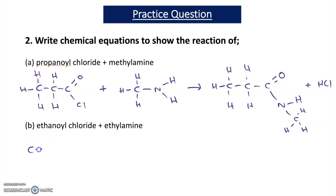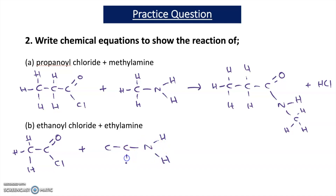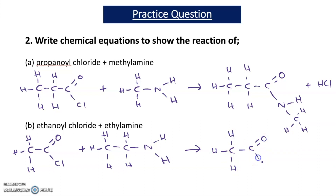Question 2B asks for the equation for ethanoyl chloride and ethyl amine. Ethanoyl chloride is CH3C=OCl, and ethyl amine is CH3CH2NH2. When they react, a substituted amide and hydrogen chloride are formed. The substituted amide is CH3C=O NH CH2CH3, because it was ethyl amine reacting. The final product is HCl.